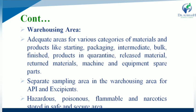In the warehousing area, adequate areas are required for various categories of materials and products, including starting material, packaging material, intermediate product, bulk product, finished dosage form, product in quarantine area, released material, return material, and machine and equipment spare parts — all with specific storage areas.